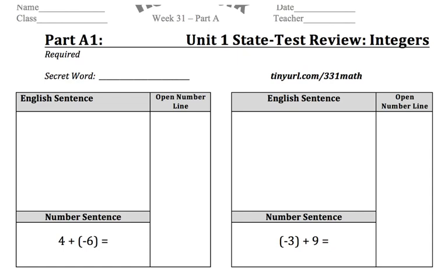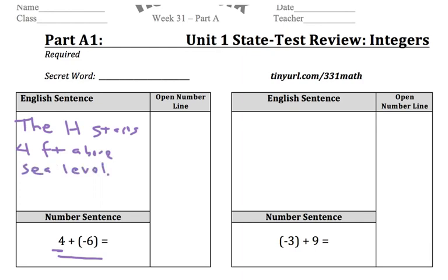For this very first problem, we have 4 plus negative 6. The main way we thought about this problem was with the flying balloon house from Up. The 4 was like our starting point — the house starts 4 feet above sea level, so we can picture it floating up here. And then we're adding. Adding normally means we're going up, but notice that we're adding a negative. Since we're adding negative 6, we add 6 weights.